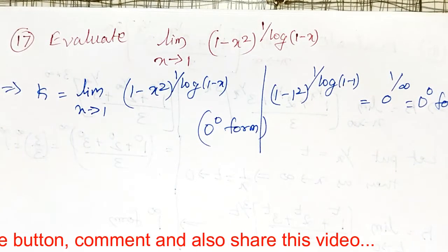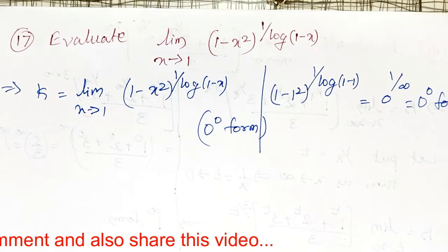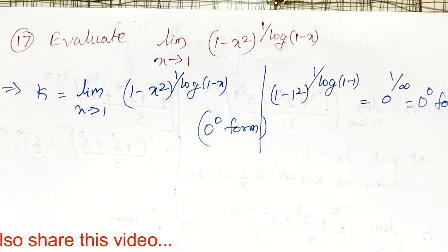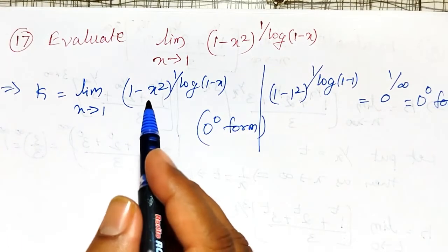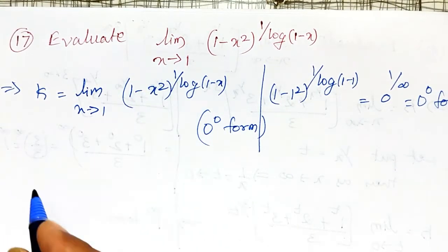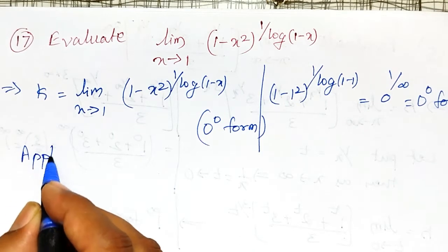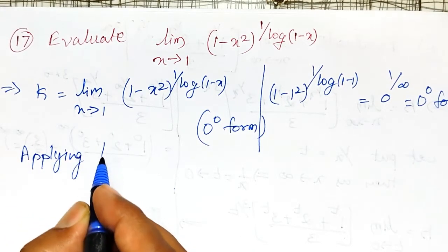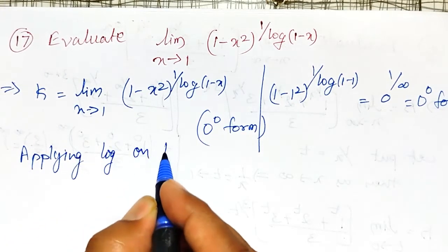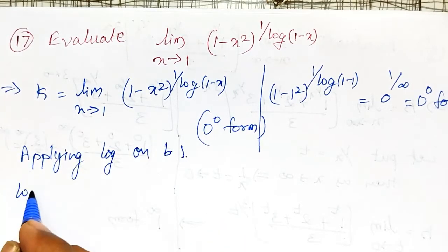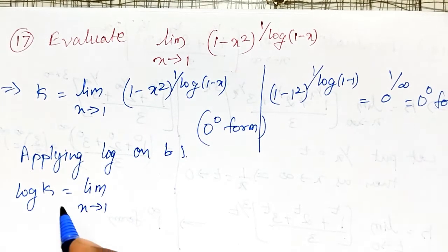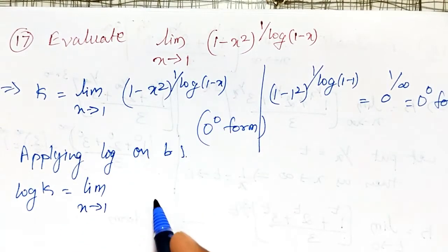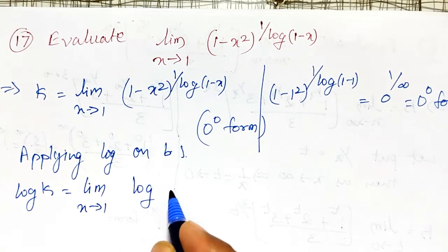If it is 0 raised to 0 form, how do we evaluate it? We could apply L'Hôpital's rule, but to apply L'Hôpital's rule it must be in 0 by 0 or infinity by infinity form. That's why I will apply log on both sides. Applying log on both sides gives log k equal to the limit as x tends to 1 of log of